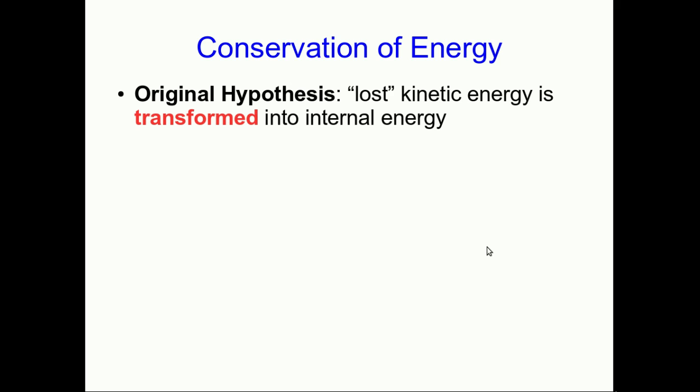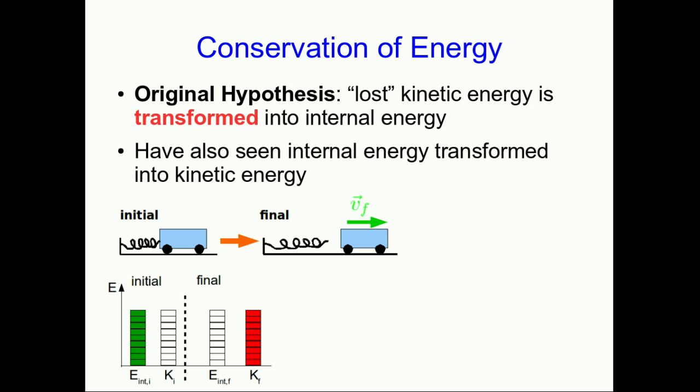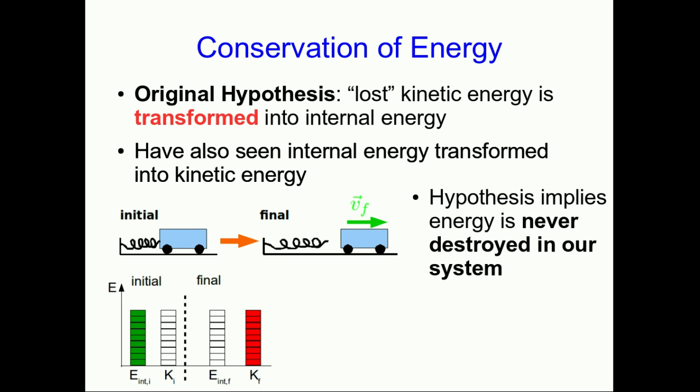Our original hypothesis, a few lectures ago, was that whenever kinetic energy is lost in a system, it's transformed into internal energy. And we've also seen that internal energy can be transformed into kinetic energy. And we put forth this hypothesis originally to imply that the energy in our system never gets destroyed, it just gets transformed into other forms in our system.